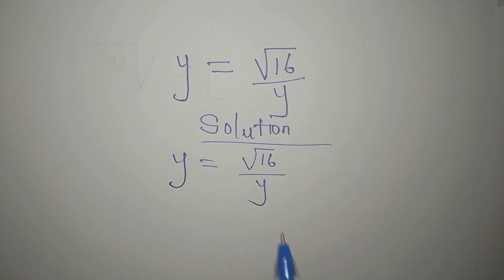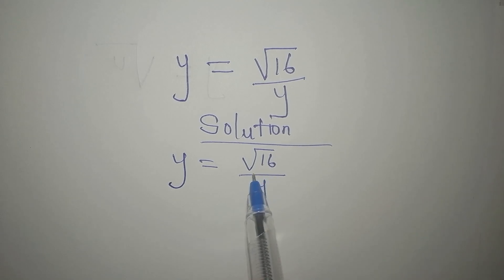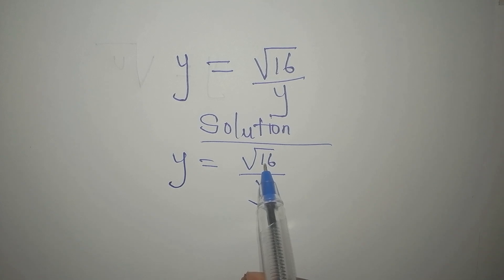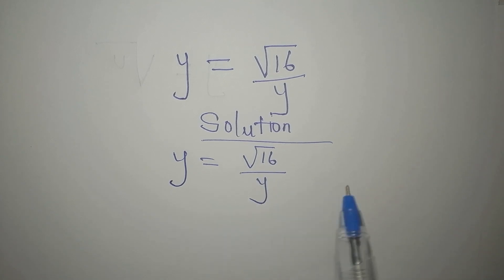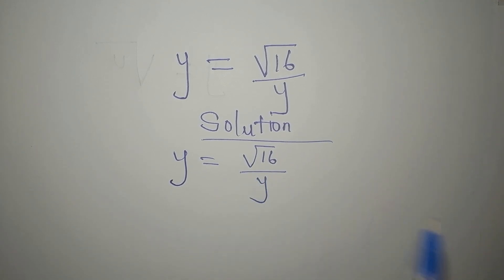If you look at this 16, it is a perfect square, and you can easily find the square root of 16. But if you do that, you will not be able to get the four solutions. So what should we do?